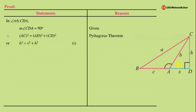Now looking at the right side of the figure, there is another right angle triangle BDC. In triangle CDB, angle D is 90 degrees — this is also given, since CD is perpendicular to BA produced. Applying Pythagoras theorem to triangle CDB: BC² = BD² + CD².